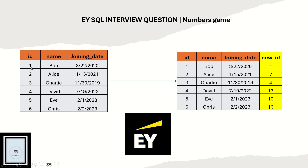You need to apply some logic on the id column and derive a new id. If you see the values, there are 1, 7, 4, 13, 10, and 16. There is some logic behind this — you need to understand what that logic is and write an SQL query so that the new id is populated based on it.